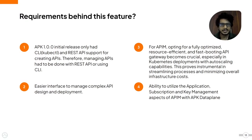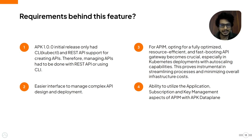Our integration addresses several critical needs within APK 1.1.0. Initially the platform supported only CLI and REST API interfaces for API creation. With this integration, we have simplified complex API design and deployment processes, offering a streamlined interface that enhances usability. It includes a fully optimized and resource-efficient gateway designed specifically for Kubernetes deployment, ensuring scalability and performance. Leveraging APM's robust capabilities such as application subscription and key management, the integration enhances API management efficiency while significantly reducing infrastructure costs.